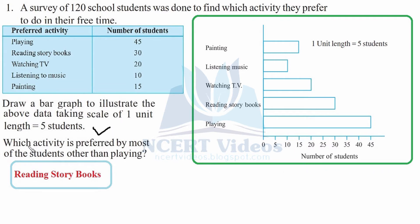For playing, we have 40, and we will draw the bar for playing at the bottom. You can see the maximum number of students is 40, so we will draw a horizontal bar. For reading storybooks, we have 30; therefore, the length will be 30 horizontally. Similarly, for watching TV it is 20, for listening to music it is 10, and for painting we have 15 students.